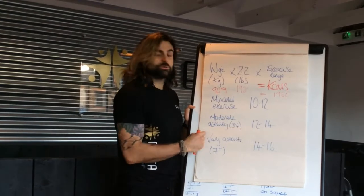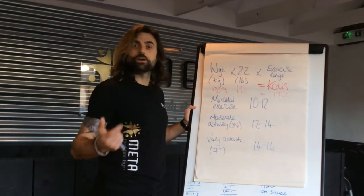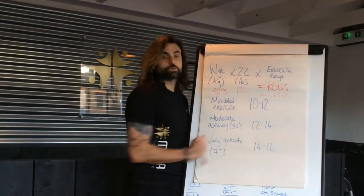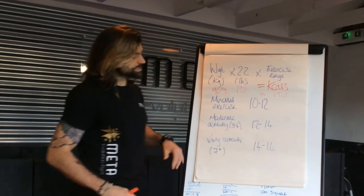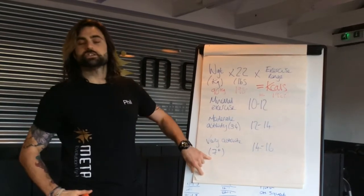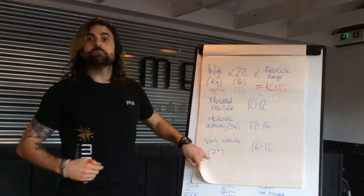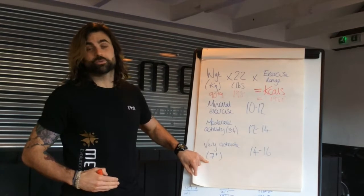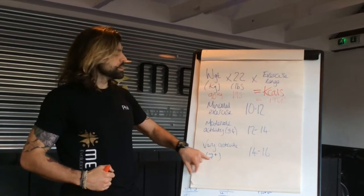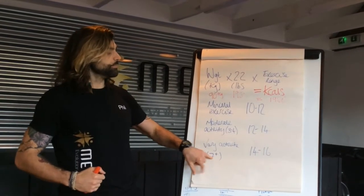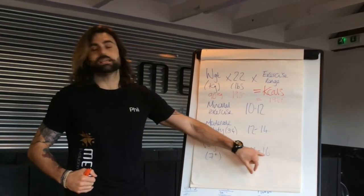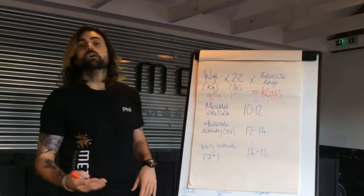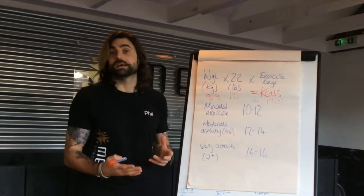If you're doing moderate activity — say between 3 and 4 times a week — then multiply by between 12 and 14. And obviously, if you're hitting the gym and we're talking about vigorous exercise — stuff that gets you hot and sweaty and out of breath — you want to times that by around 14 to 16. That will give you your total calorie requirement for the day.